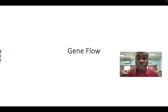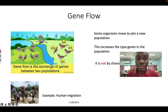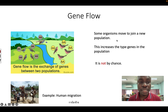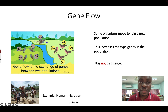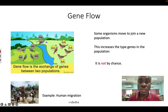Now let's look at number four, which is gene flow. In gene flow, some organisms move to join a new population. For example, a brown bird moves to a new place and joins another group of birds. When they move, they take their genes with them and can mix with the genes of the organisms in the new place. This is not by chance — the organism chooses to move by itself. An example is human migration.